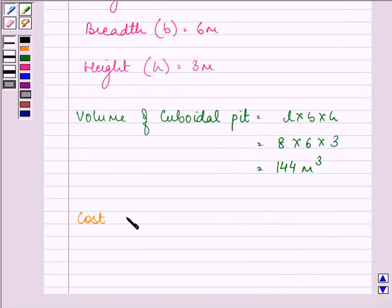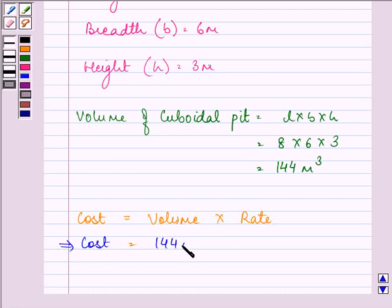So, the cost will be equal to volume into rate, that is further equal to volume is 144 meter cube into rate is rupees 30 per meter cube, that will give us 144 into rupees 30.